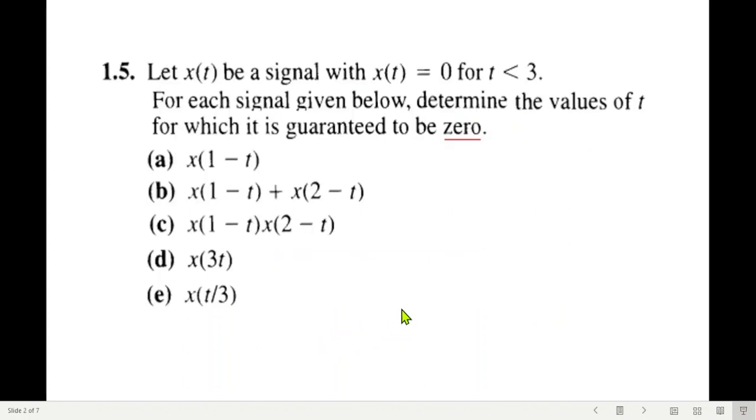So straight away to the question. Let x(t) be a signal with x(t) = 0 for t less than 3. Now the signal is not given, so I have drawn an assumed signal to be like this. So this is the signal and x(t) is 0 for t less than 0, so you can see the signal is 0 for t less than 0.